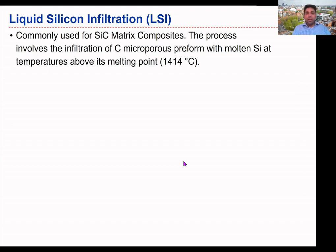If you think about the concept behind the liquid silicon infiltration process, it is a type of reactive melt infiltration technique in which the ceramic matrix forms as a result of chemical interaction between the liquid metal infiltrated into a porous reinforcing preform and the substance surrounding the melt. The idea is that we use liquid silicon, which can infiltrate into the preform or reinforcement, and the capillary reaction supports that process.